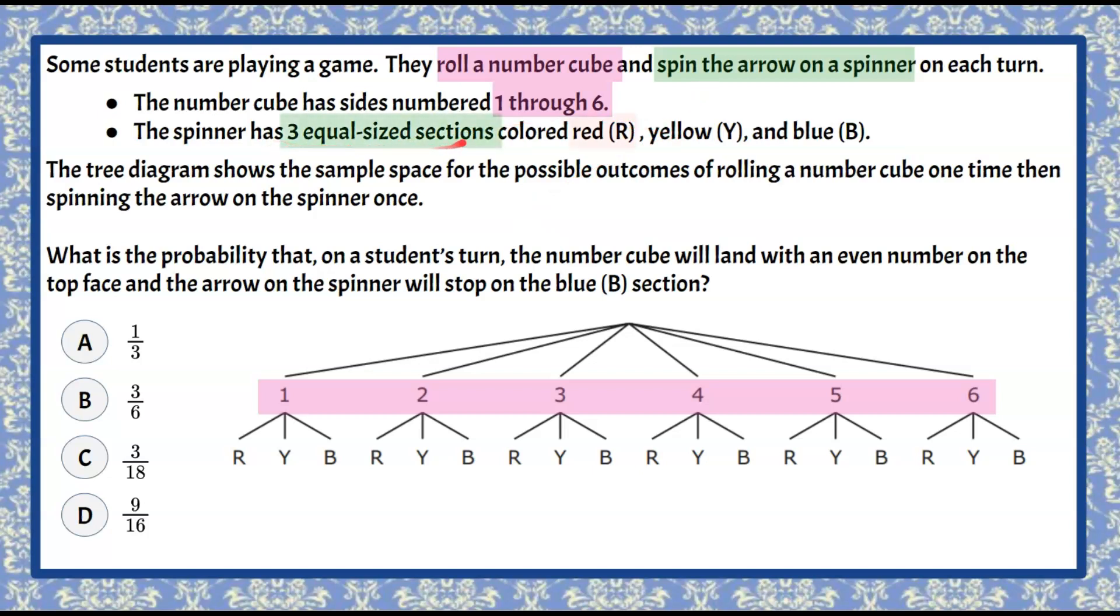Our spinner has three equal sized sections, meaning it's fair. The first section is red, so we have an equal chance of getting red, yellow, or blue.